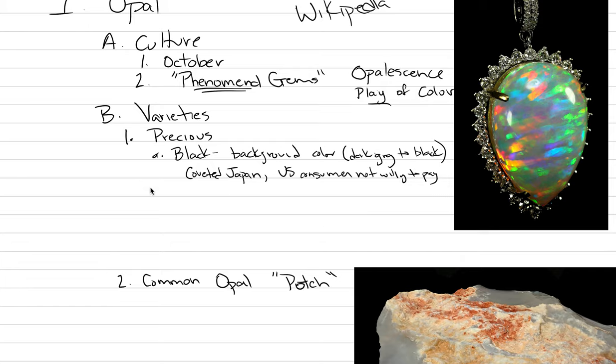The next type of opal is called white opal. This is the type that is sold in the United States. Here's an example of very fine, high-quality white opal, and here the background is light gray to white. It's a fairly transparent material sitting over a background, and that background is more white color.